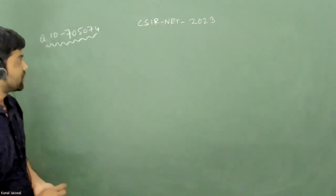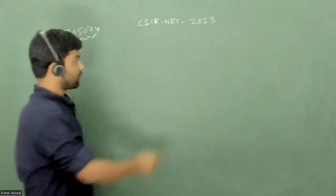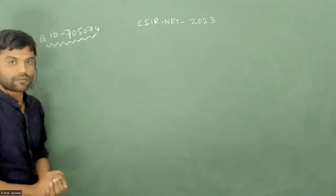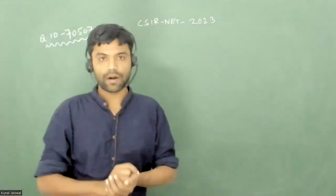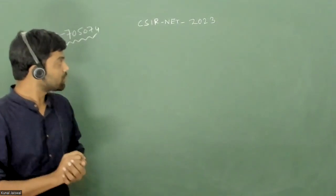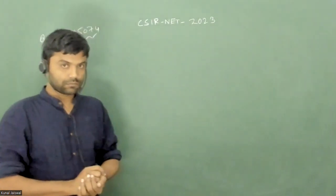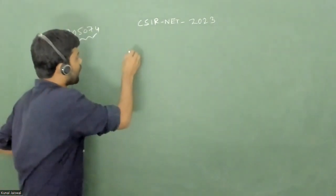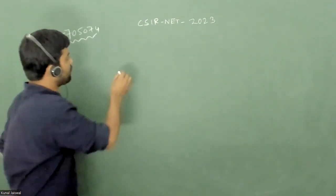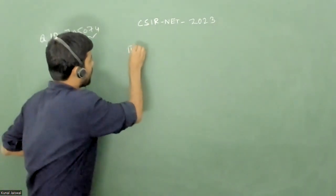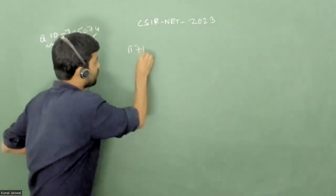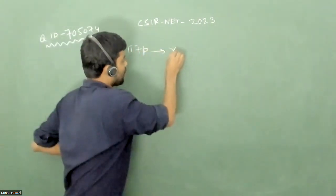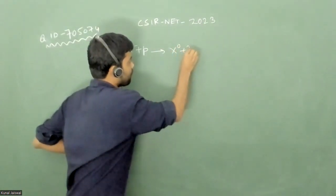Today we are going to solve a question from CSIR NET 2023, question ID 705074, which is from particle physics. This is a really interesting question. In the question, you have an x0 particle that is produced by the interaction where pi minus interacts with a proton, producing a neutral particle x0 along with a neutron.